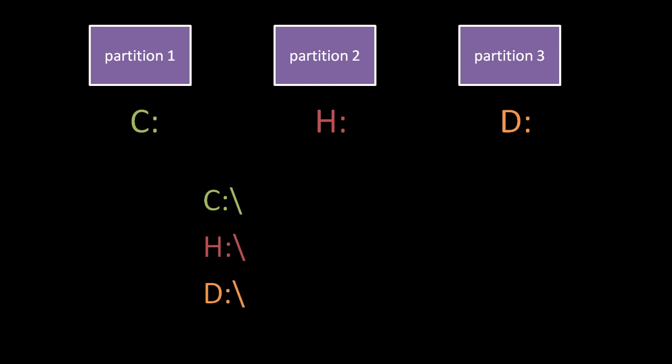In Windows, each partition is assigned a drive letter, usually denoted with a suffixed colon — for example, C:, H:, D:, etc. A file path is a string of text denoting the location on a system of a file or directory. In Windows, the root directories on these drives are known by the paths C:\, H:\, and D:\, respectively.